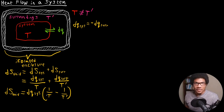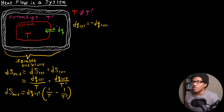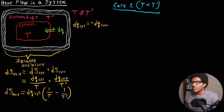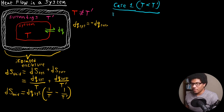We can use this equation to analyze two different scenarios. Case 1 is where T is less than T prime — the system is at a lower temperature than the surroundings. That means heat is going to be transferred from the surroundings into the system, so heat is absorbed by the system. In this case, DQ of the system is going to be greater than zero — it's going to be a positive number.